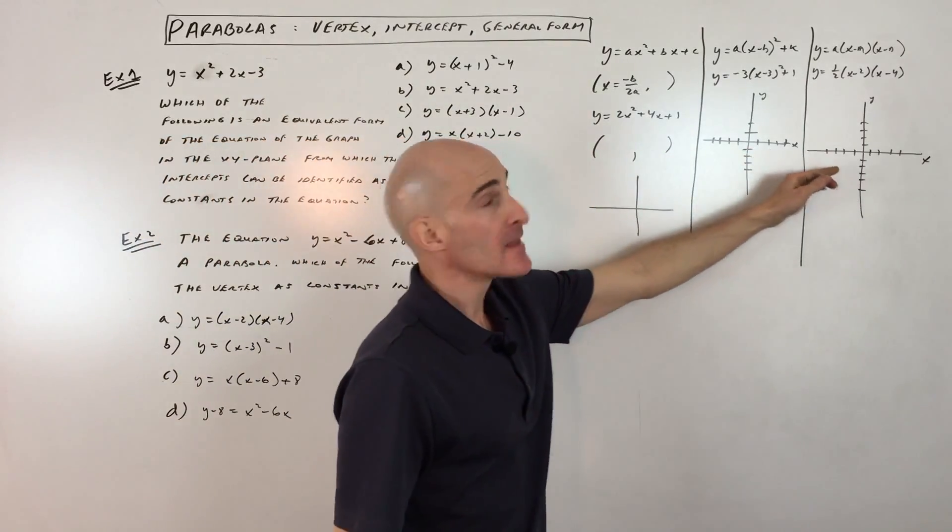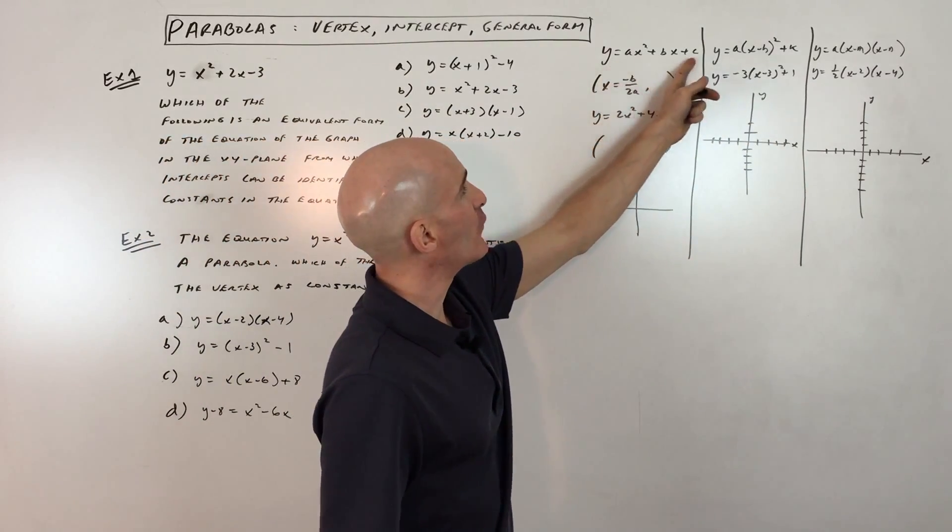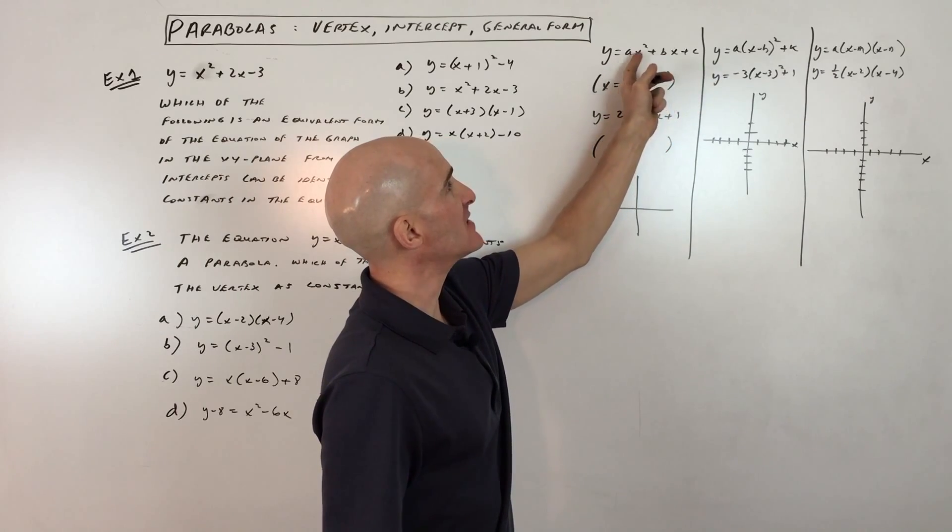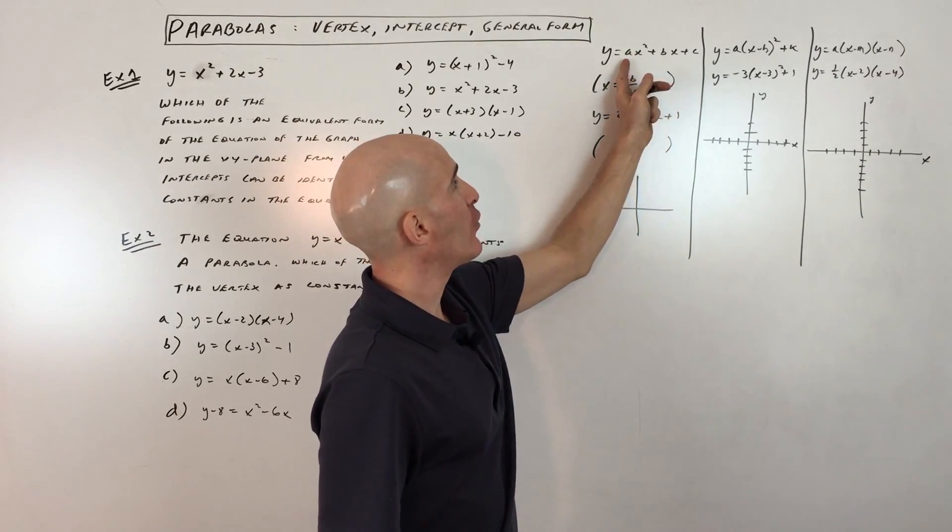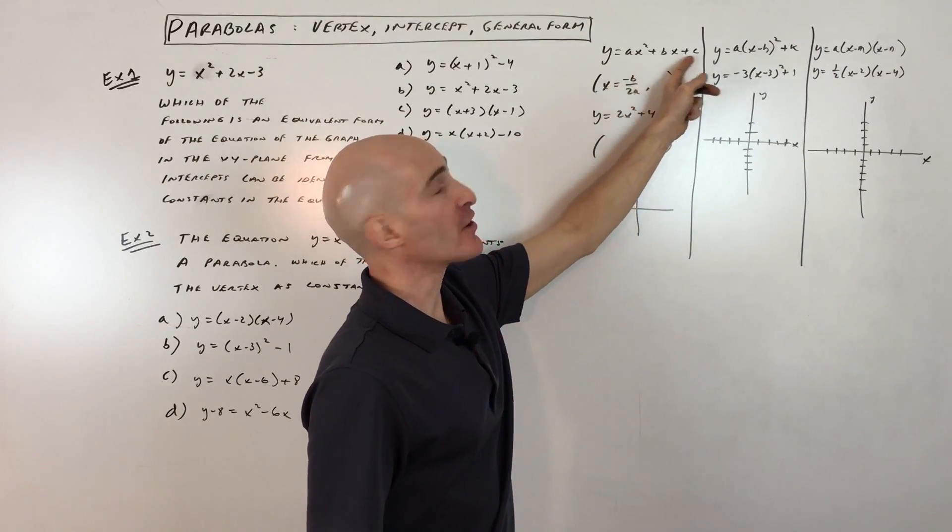Let's talk about the three different forms. So first of all, you've got this general form where it's just multiplied out, it's in descending order, and you've got your coefficients a, b, and c in front of the variables, right?